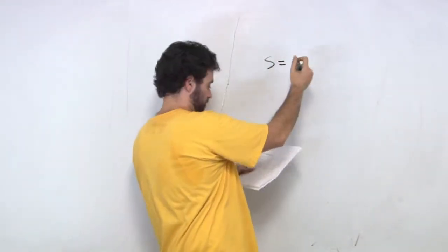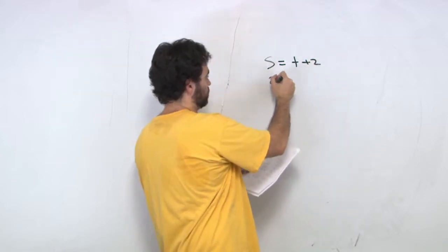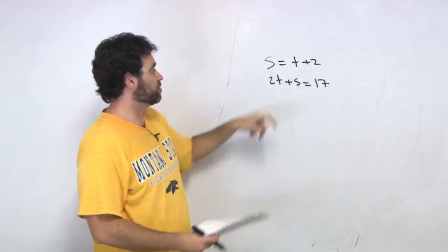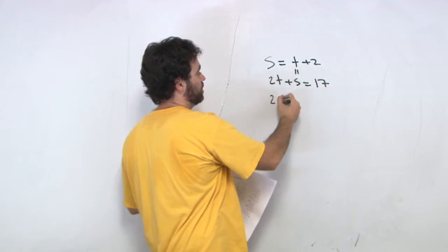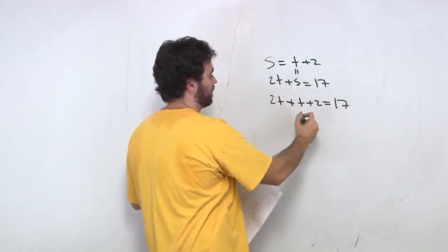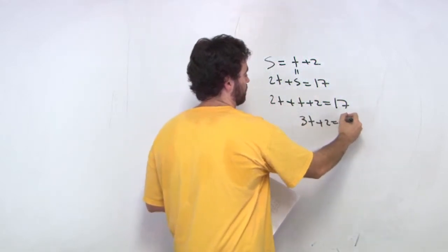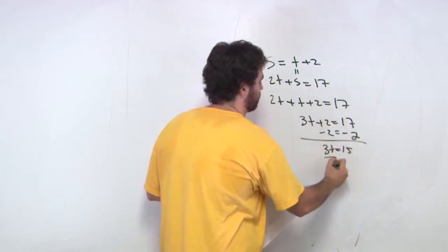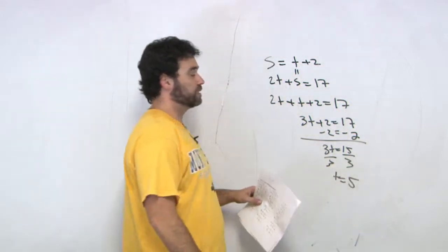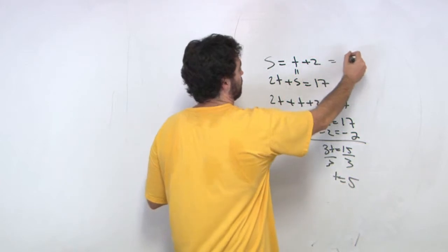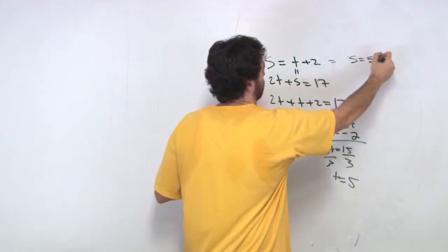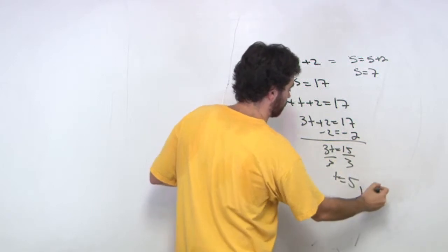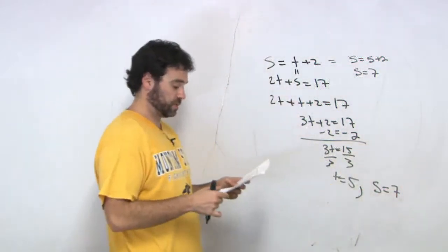So we're going to look at this question. s equals t plus 2, and 2t plus s equals 17. So again, this is a substitution method, because the s is already isolated. So I'm just going to replace our s right here. So we've got 2t plus t plus 2 equals 17. That gives us 3t plus 2 equals 17. Minus the 2. We get 3t equals 15. Divide by 3. And t equals 5. t equals 5. I'll replace that right here. I'm going to say that s equals 5 plus t, which is 7. So s equals 7. So we're going to say that t equals 5 and s equals 7. So that's our substitution method.